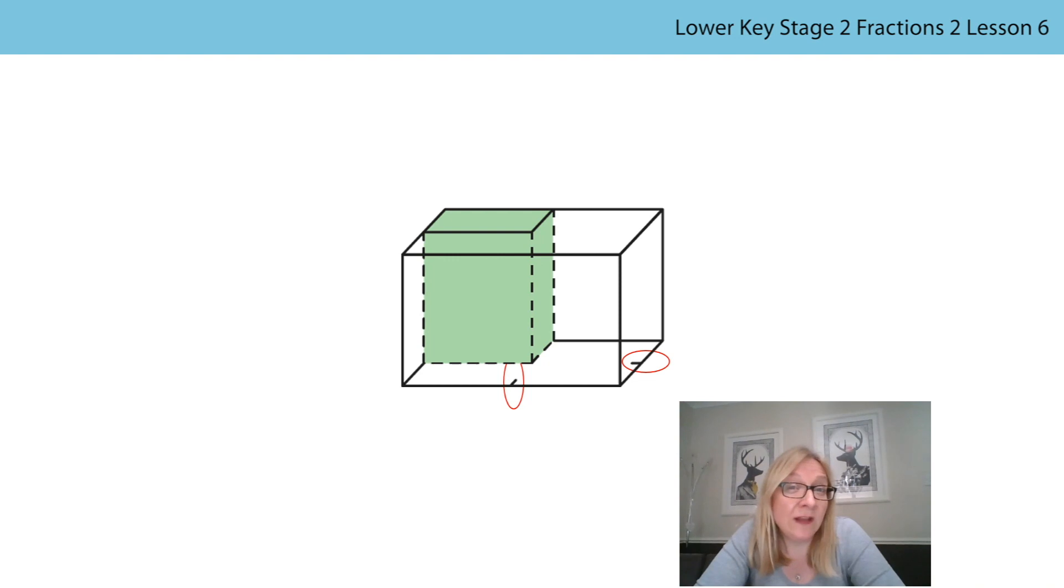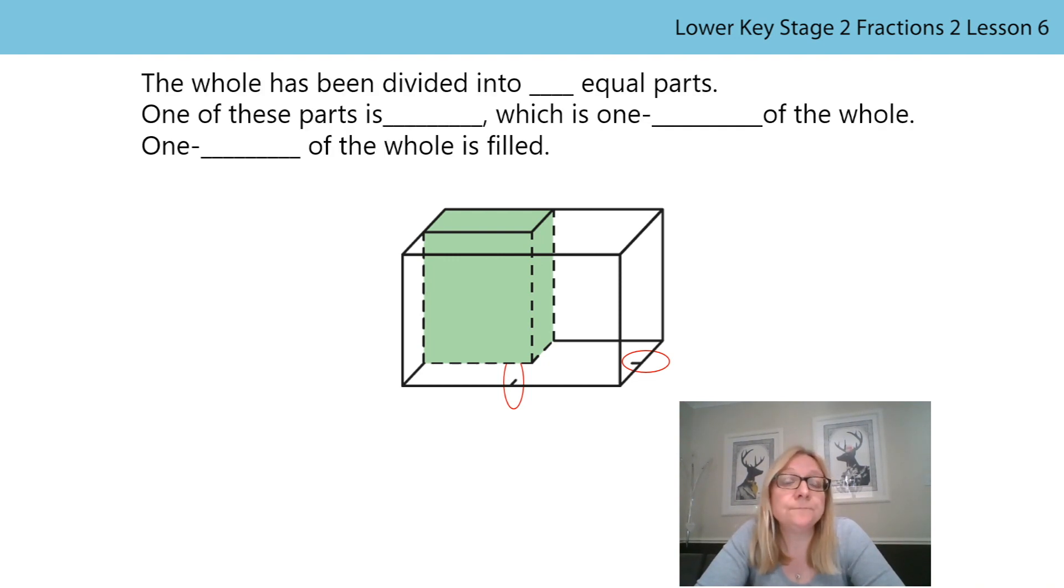We can use that information to fill in the blanks of the sentence together. The whole has been divided into four equal parts. One of these parts is green, which is one-quarter of the whole. One-quarter of the whole is filled. Were you right? Well done!